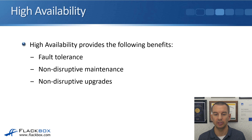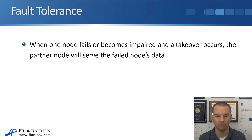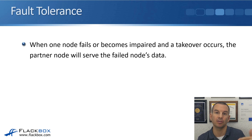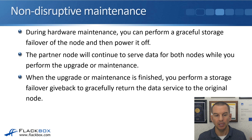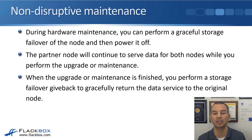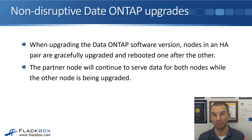High availability provides the following benefits: fault tolerance in the case of a controller failure, and it also allows planned events such as non-disruptive maintenance and non-disruptive upgrades. For fault tolerance, the HA partner will take ownership of the failed controller's disks. For non-disruptive maintenance, you can perform a graceful storage failover of the node to its partner, then power it off. The partner node continues to serve data for both nodes while you perform the upgrade or maintenance. When finished, you perform a storage failover giveback to gracefully return data service to the original node.